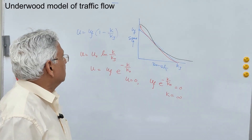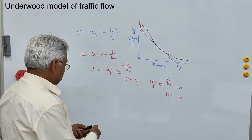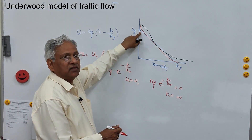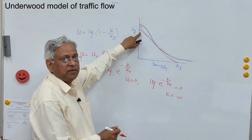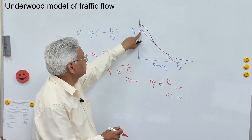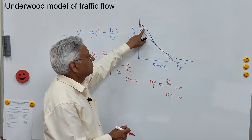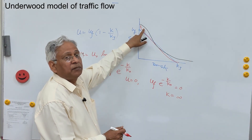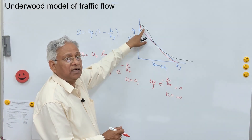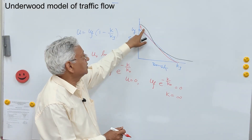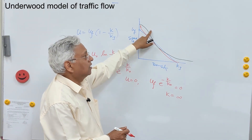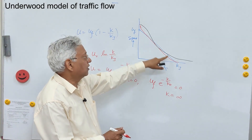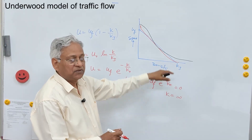If you compare the three models: the Green Shield equation is a straight line between speed and density; the Greenberg model is not applicable for light traffic conditions; and the Underwood model is not applicable for heavy traffic density conditions.